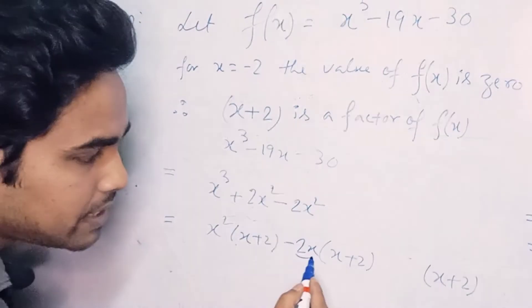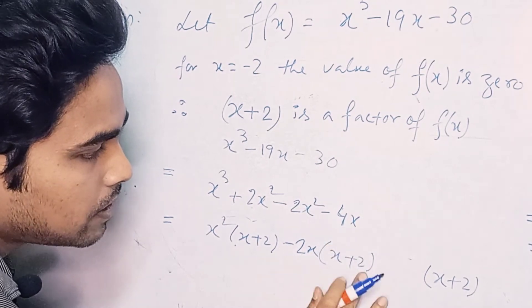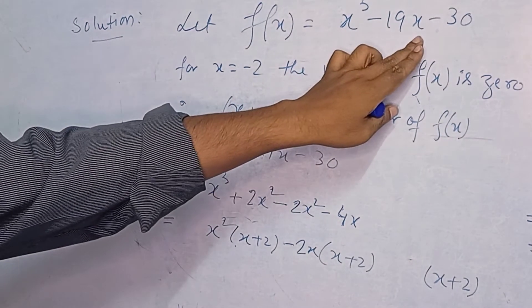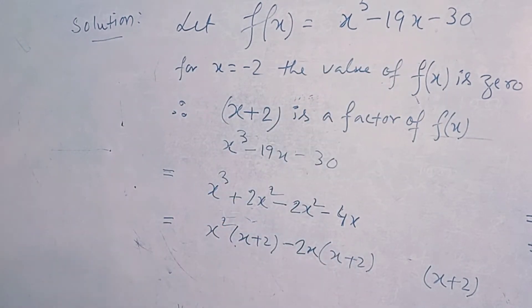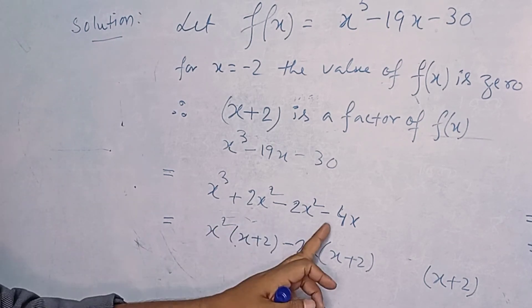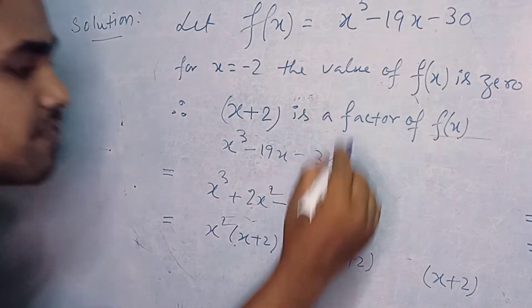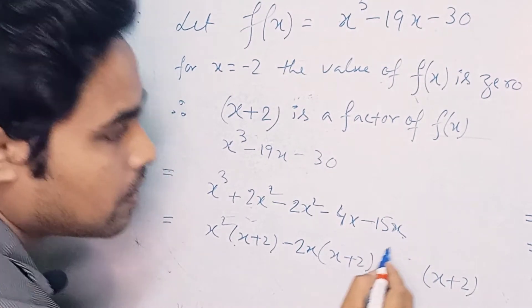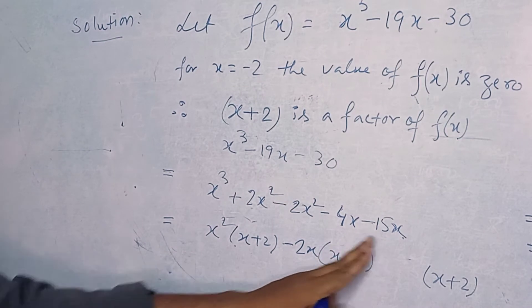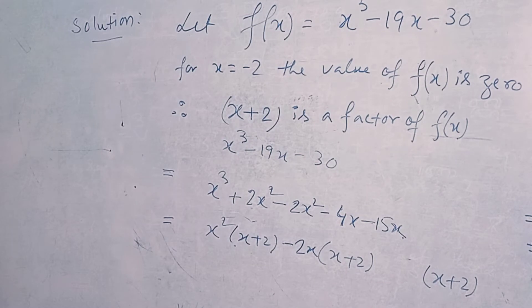Now, minus 2x into 2 gives minus 4x. But in the question there is minus 19x and we got minus 4x. So what term should be added to minus 4x so that it becomes minus 19x? It is minus 15x, because minus 4x minus 15x equals minus 19x.